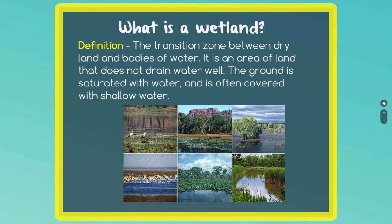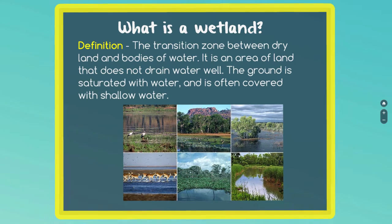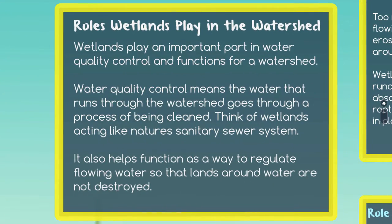Now there are a lot of different types of wetlands. Some can have fresh water, some can have salt water, but all wetlands play a very important role in our watershed. Wetlands play an important part in our water quality control and functions for the watershed.